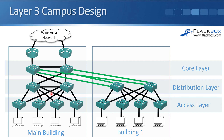An increasing trend is layer 3 everywhere, and the reason it's now possible is that layer 3 switches have come down in price a lot. Back in the day, layer 3 switches were much more expensive than layer 2 switches, and the access layer — where you had the high port count with all your hosts — made it cost-prohibitive. But because prices have come down, it is more feasible to do that now.